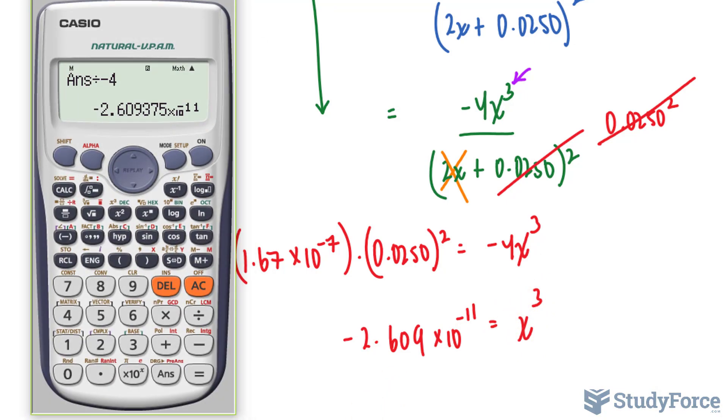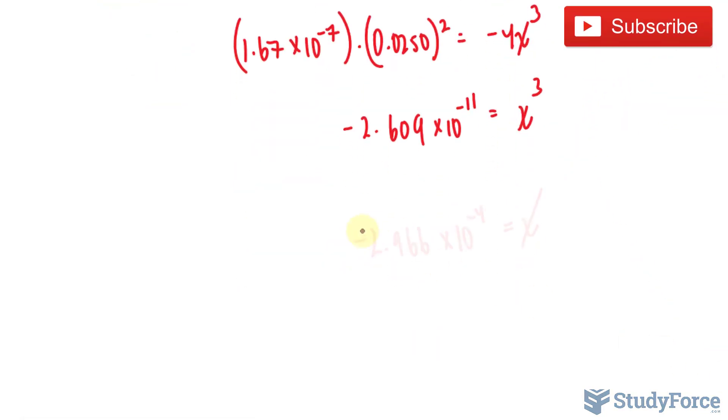To find out what X is, I will cube root both sides. So to access that feature, on my calculator, I have to click this button, put the index of 3 and the number that I just found, giving us negative 2.966 times 10 to the power of negative 4. Remember, this does have to round to three significant figures eventually, so I'll just put a dot underneath the 6 as a reminder.